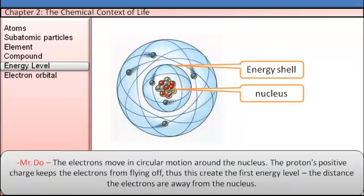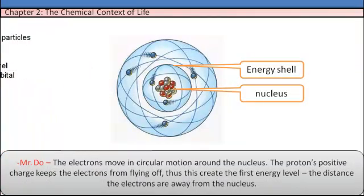The electrons move in circular motion around the nucleus. The protons' positive charge keeps the electrons from flying off. Thus, this creates the first energy level, the distance the electrons are away from the nucleus.